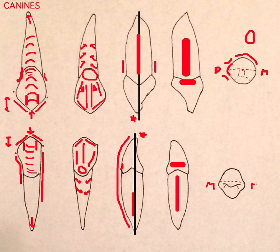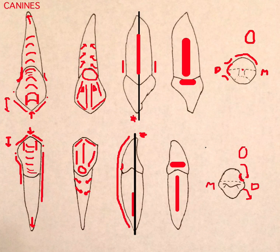The tooth has a distal twist so it can fit in the mandibular arch. You're also going to get an oval cross section here as well.